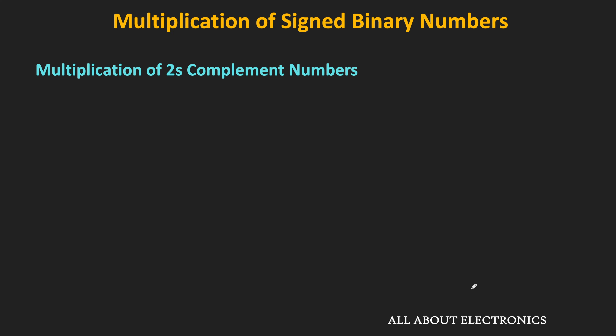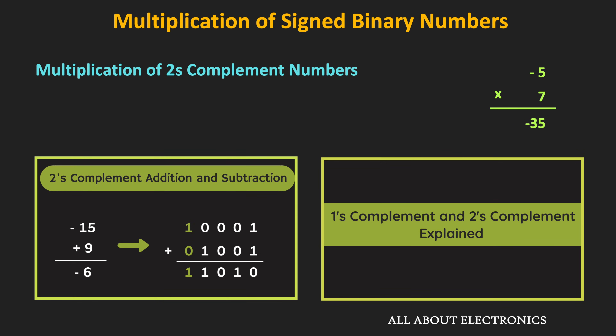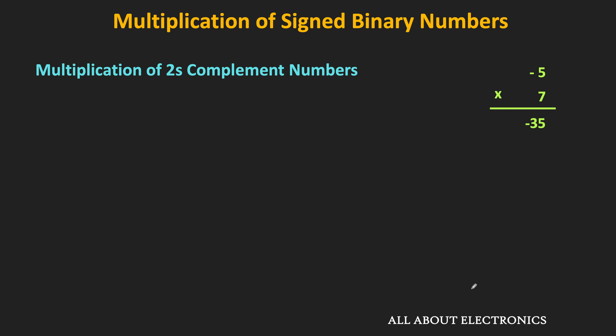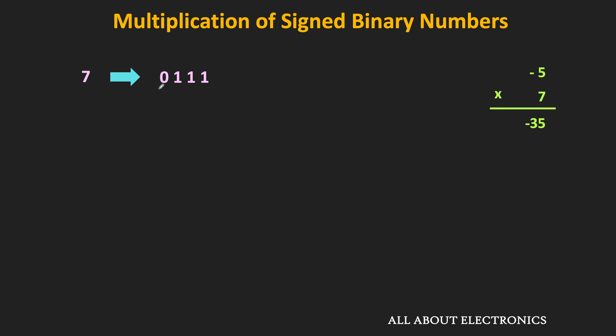Let's say we want to multiply -5 and 7 in binary form. First, let us represent these two numbers in the 4-bit 2's complement form. For positive numbers, the 2's complement representation is the same as unsigned binary. So in 4 bits, +7 can be represented as 0111, where the MSB represents the sign bit.